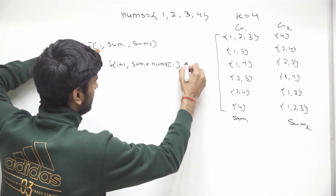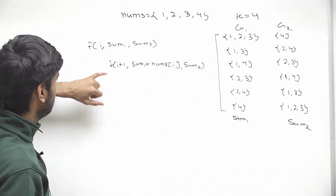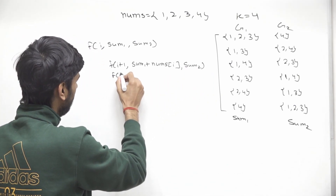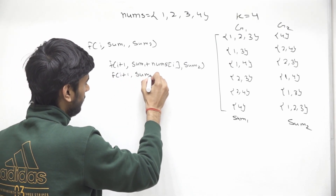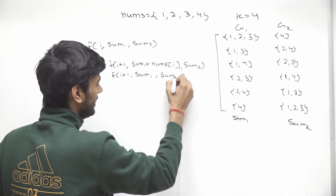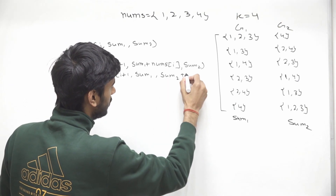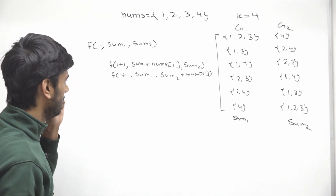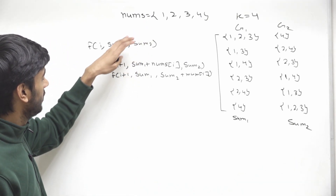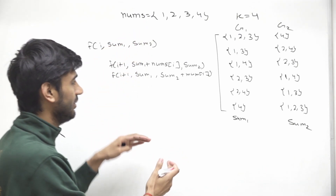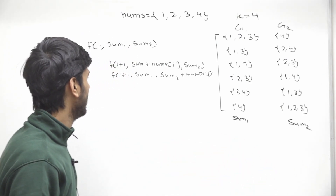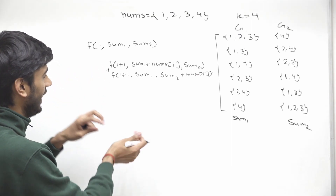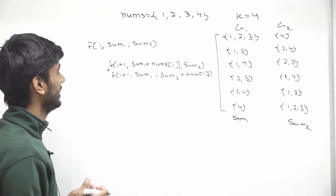Sum2 remains as it is for the first recursive call. The second recursive call keeps sum1 the same and adds nums[i] to sum2. These are the two recursive calls — one placing the ith element in group 1 and one placing it in group 2. We can write the whole logic, add the number of ways returned from both calls, and return the result.